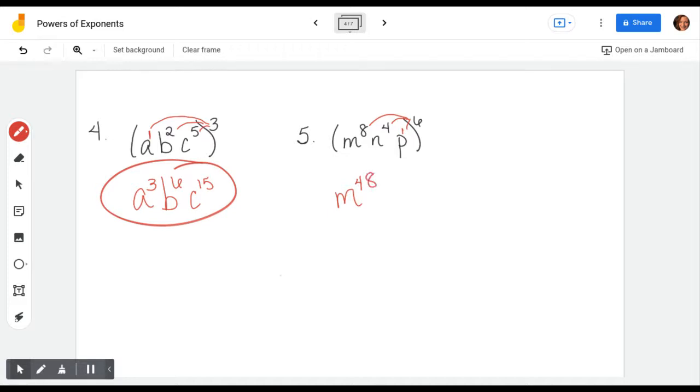Distribute exponent to exponent, there's a 1 there to exponent, so that becomes m to the 8 times 6 is 48, n to the 4 times 6 is 24, and p to the 1 times 6 is 6. Not too bad, right?